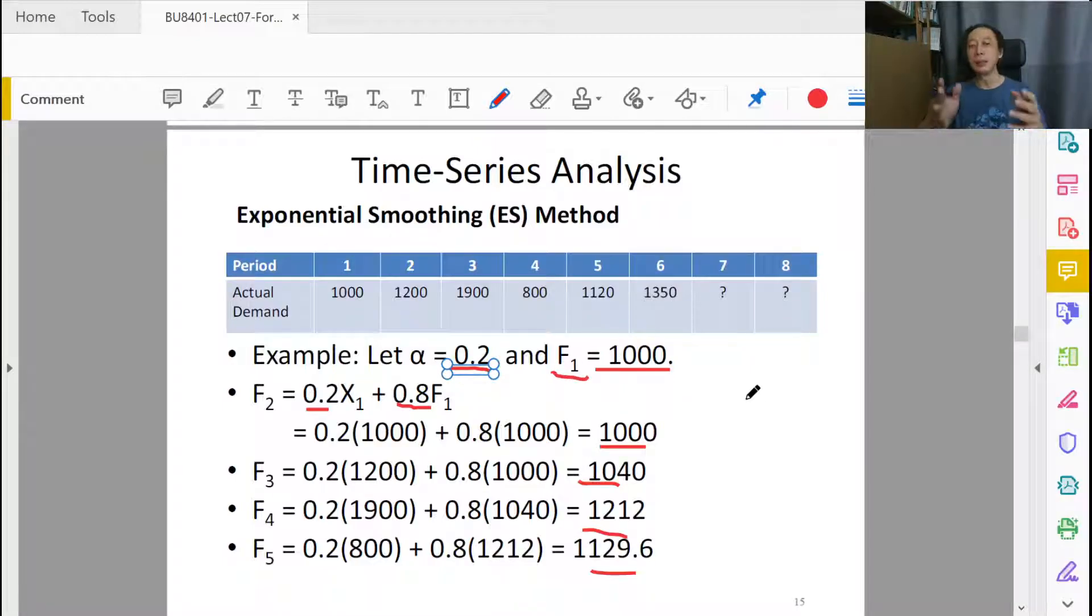One thing to note about f1 though, is that here the quiz question, exam question, exercise question will typically give you the f1 value. But if you are the one getting so excited about exponential smoothing, and you want to choose or find your own f1 value, what do you do? Now, f1 value, typically there are maybe three ways to get things started. So one is you look at x1, cheating.